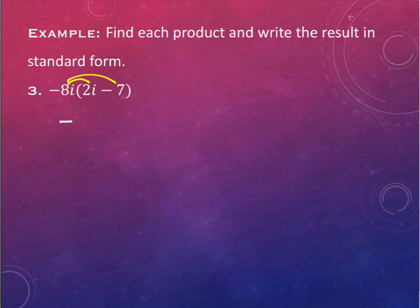Yeah, negative 16i squared. Just do the distribution part as you would normally, and then we'll deal with the i squared parts later. How about the next one? What is negative 8i times negative 7?